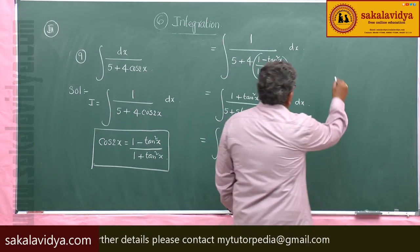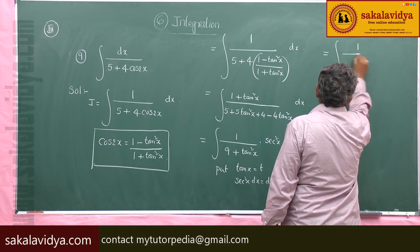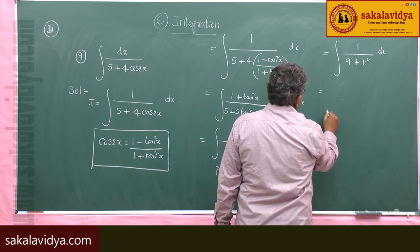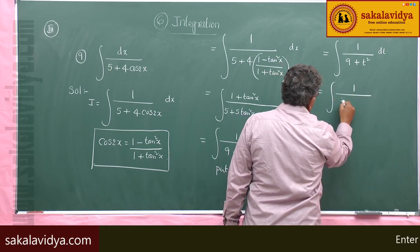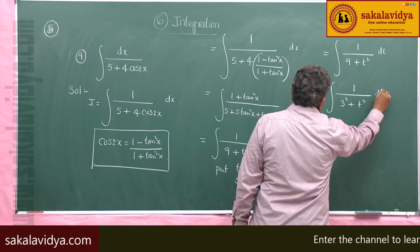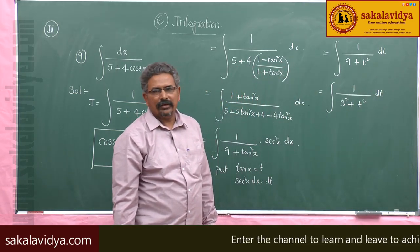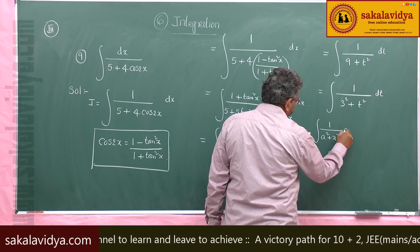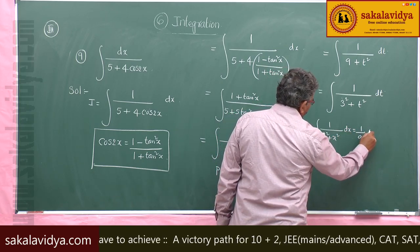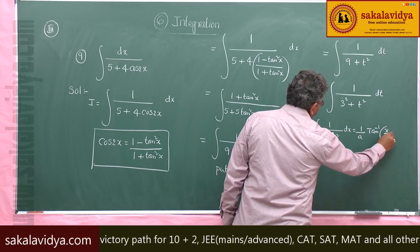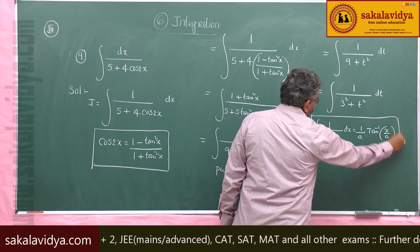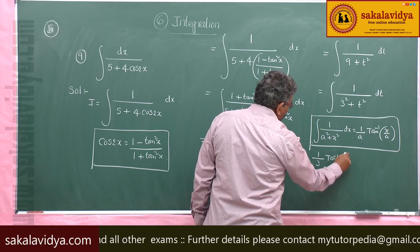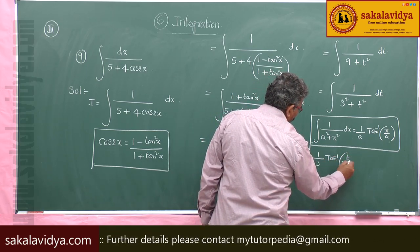So the integral becomes integral of 1 by (9 + t²) dt, which is integral of 1 by (3² + t²) dt. Using the standard formula, integral of 1 by (a² + x²) dx = (1/a) tan⁻¹(x/a), with a = 3, this gives (1/3) tan⁻¹(t/3).